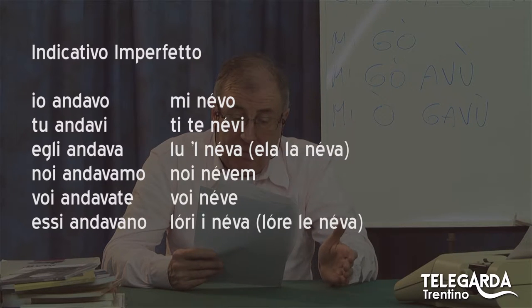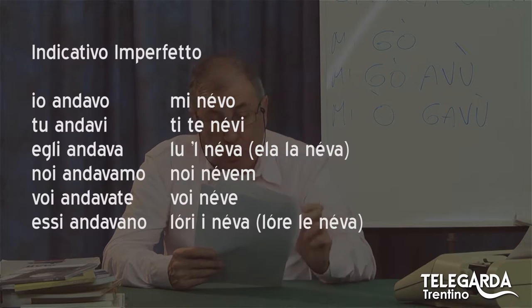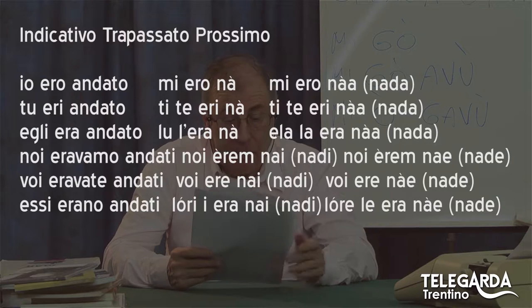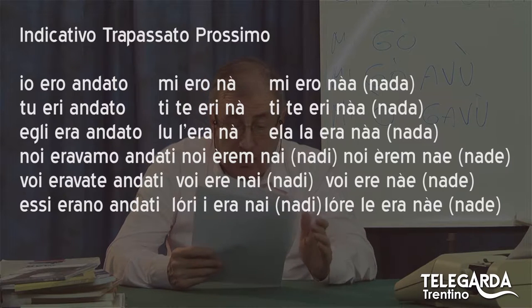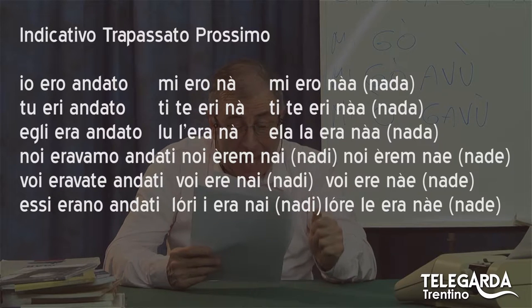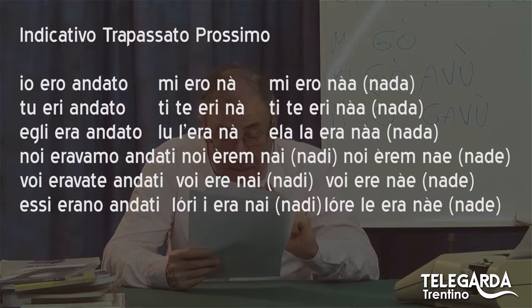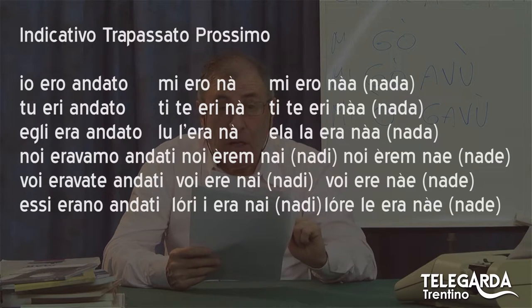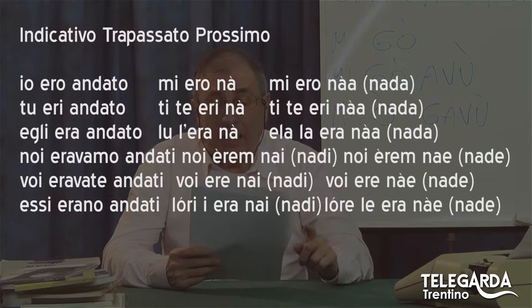All'indicativo imperfetto corrisponde come tempo composto il trapassato prossimo: io ero andato, tu eri andato, eccetera. Mi ero na, ti teri na, lul era na, noi erem nai o nadi, voi ere nai o voi ere nadi, lori i era nai o lori era nadi.